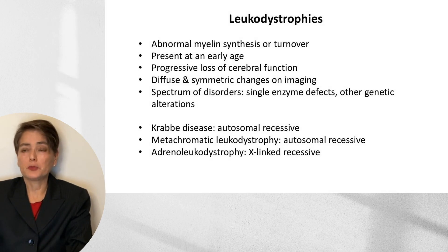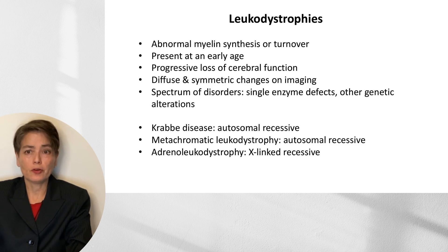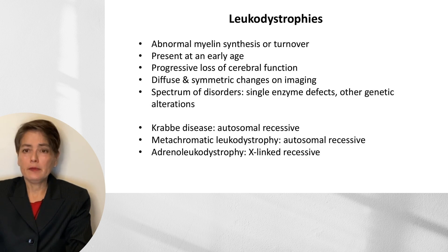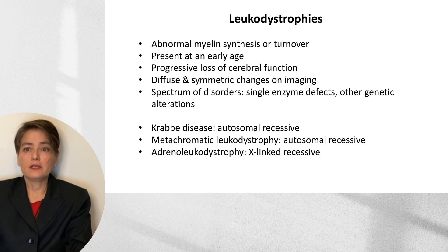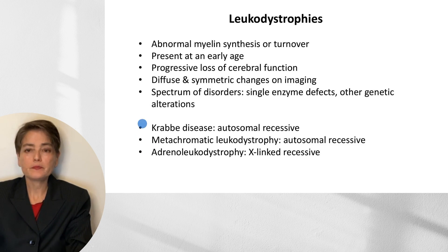This brings us to the leukodystrophies, which have significant differences from multiple sclerosis. These are due to abnormal myelin synthesis or turnover, present at an early age in most cases, and show progressive loss of cerebral function. Imaging shows diffuse and symmetric changes, in contrast to the discrete lesions of multiple sclerosis. Many are due to single enzyme defects. The three covered here — Krabbe disease, metachromatic leukodystrophy, and adrenal leukodystrophy — all show recessive inheritance, with the first two autosomal recessive and adrenal leukodystrophy X-linked recessive.